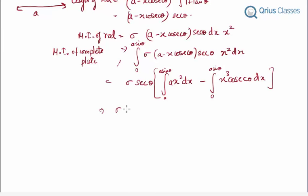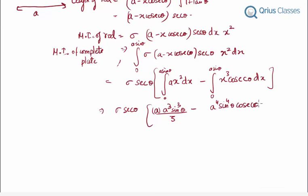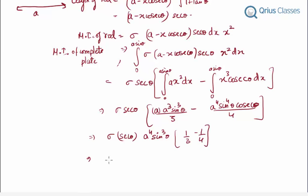Evaluating the integral — σ and secθ are constants taken out — we get: σ·secθ · [A·(a³·sin³θ)/3 − (a⁴·sin⁴θ·cscθ)/4]. Taking common factors out: σ·secθ·a⁴·sin³θ·(1/3 − 1/4) = σ·secθ·a⁴·sin³θ·(1/12).